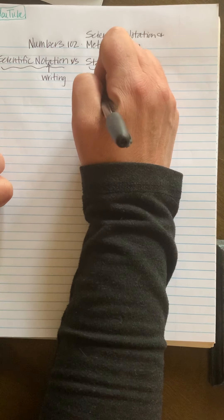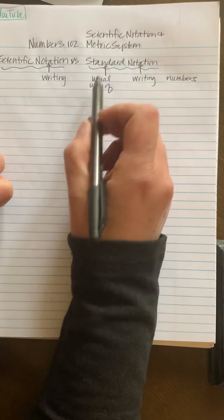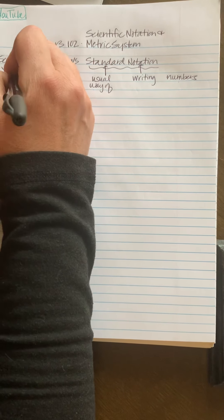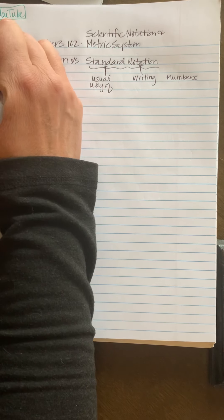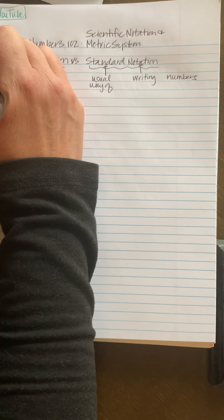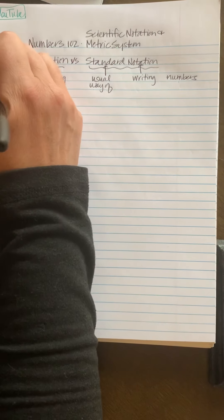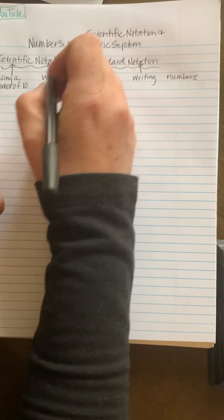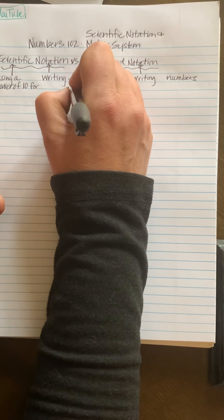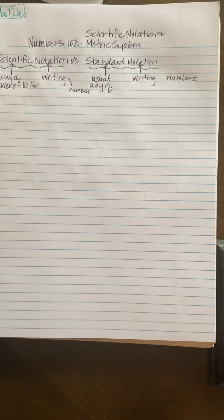Standard notation is the usual way of writing numbers. Scientific notation is using a power of 10 for writing numbers.